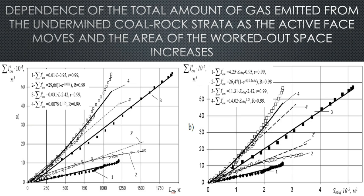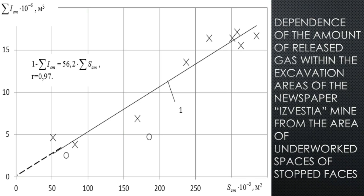The given graphs indicate that under unchanged mining geological and mining technical conditions, the total amount of released gas changes in direct proportion as the length of the worked-out column or the area of the worked-out space increases. Despite the changes in mining and geological conditions during the development of the seam, a close correlation was established between the amount of released gas and the area of the worked-out area. This indicates that the longwalls were mined in similar mining and geological conditions.